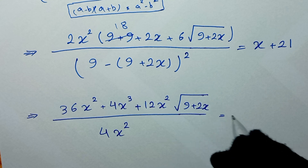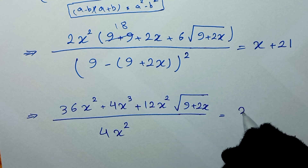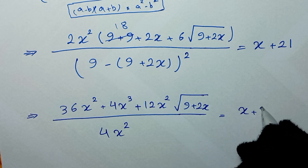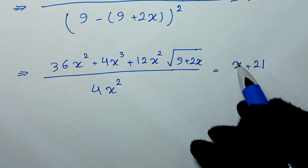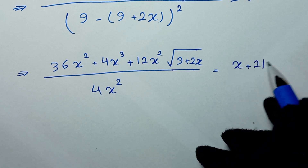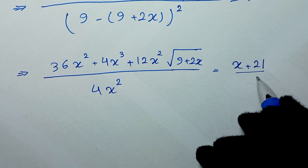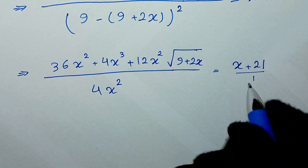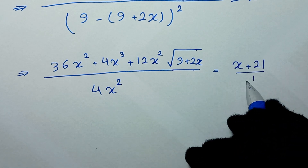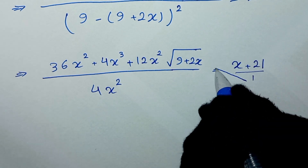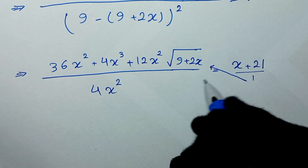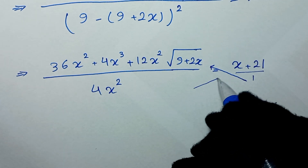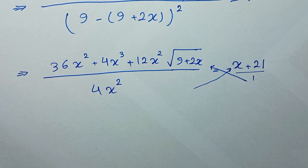This is equal to x plus 21, which we write as x plus 21 over 1. We then apply cross multiplication: this side times this side and that side times that side.